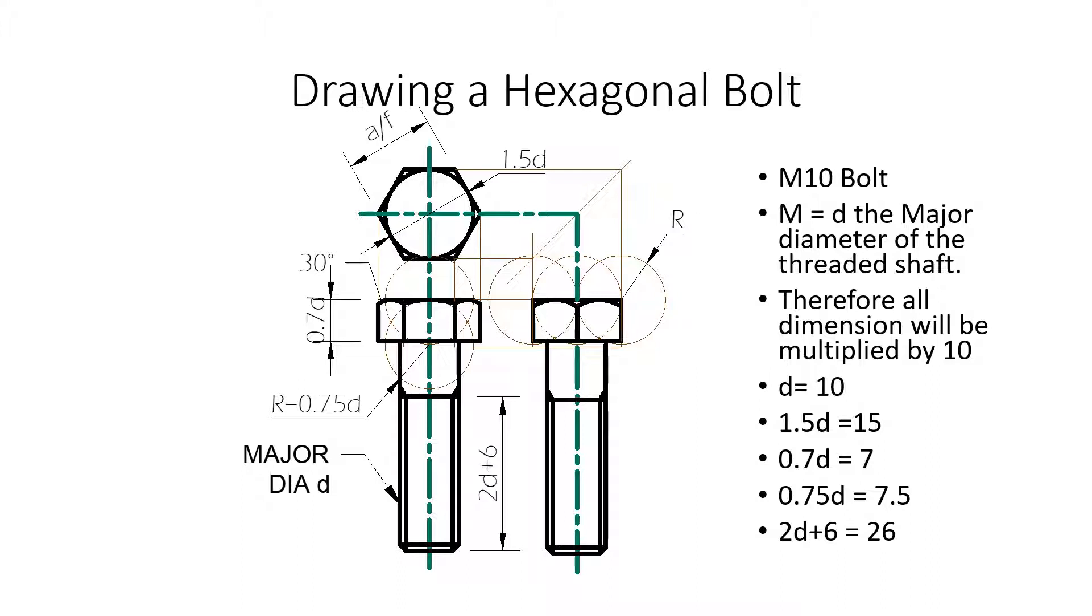If we notice the dimensioning, we're going to see major diameter D. Then, the height of the bolt head is 0.7D. The distance across flat for the bolt head is 1.5D. According to what the diameter of the threaded shaft is, you would have to multiply these dimensions by that factor. For example, the height is 0.7D and we're doing an M10 bolt. That means 0.7 times 10 is going to be 7. The height of the bolt head is going to be 7 millimeters.